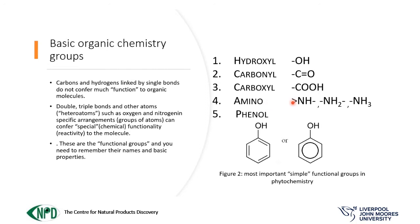Then the amino group, which could be primary, secondary, or tertiary, depending on how many carbons it is attached to. The nitrogen confers basic properties because it can accept an extra hydrogen. And finally, the phenol, which is a combination of two features: the aromatic ring (sometimes called arene) and a hydroxyl — an alcohol. In this case, the alcohol is able to donate its hydrogen, so the phenol group is special because it becomes a weak acid.